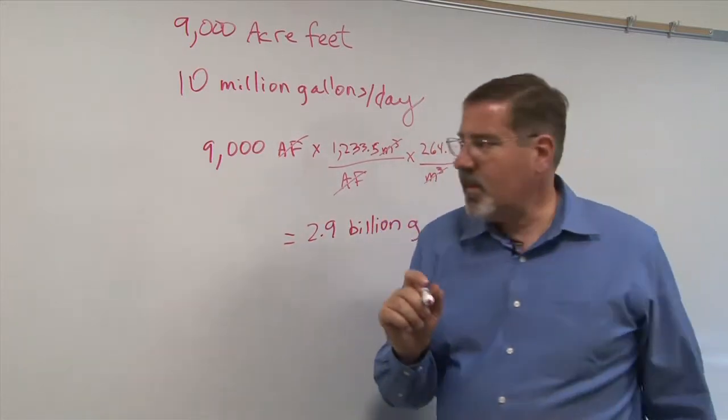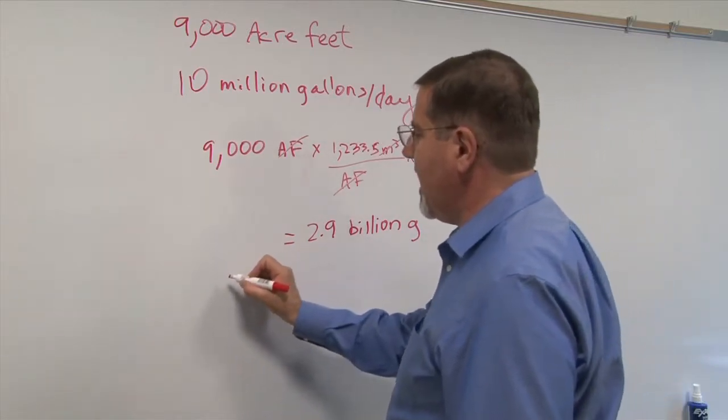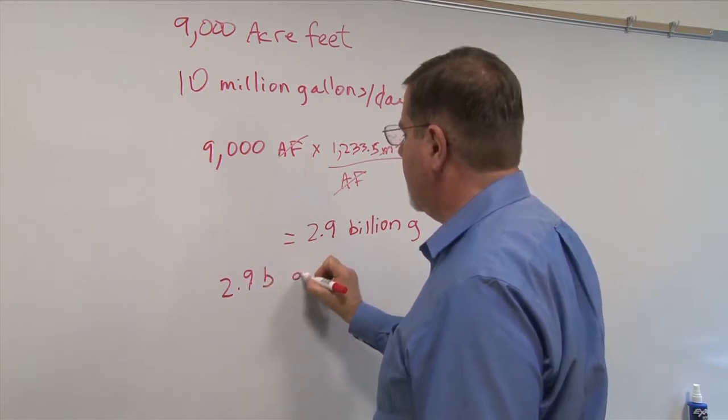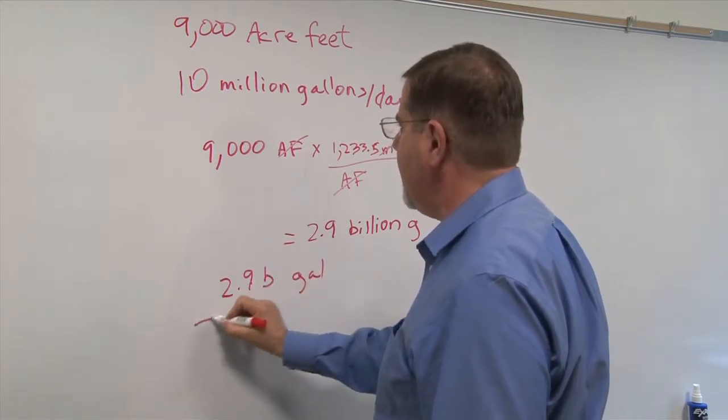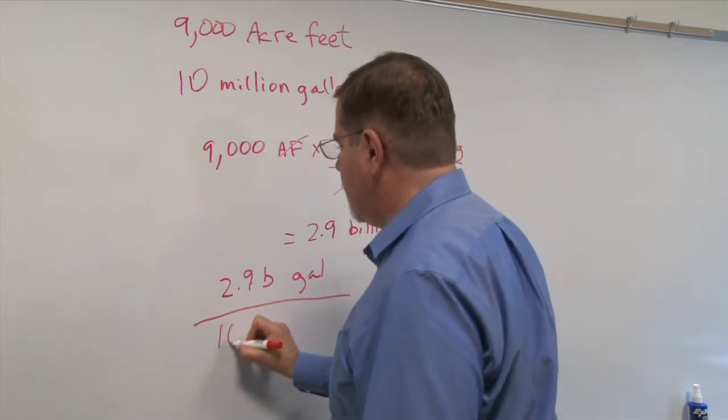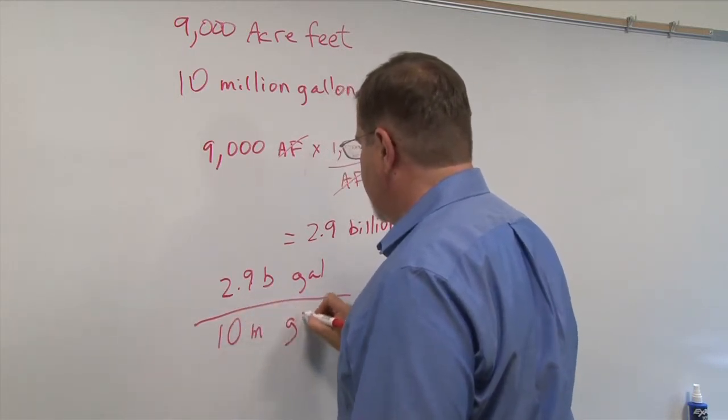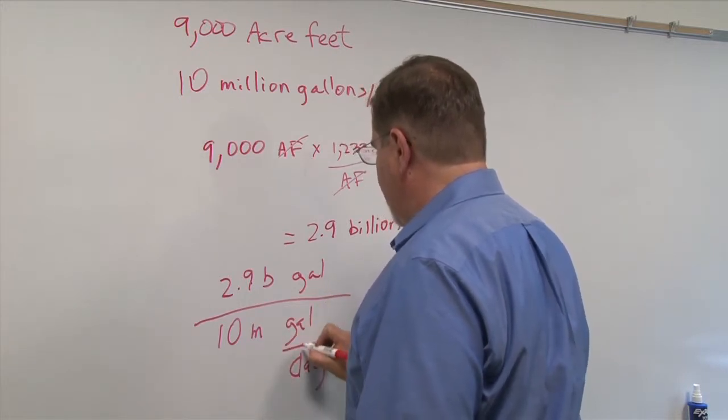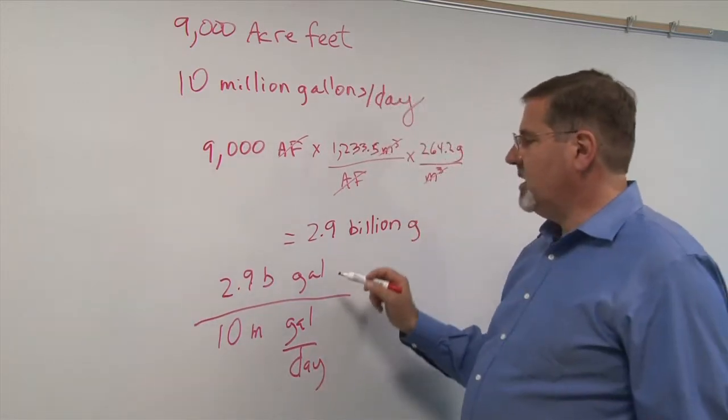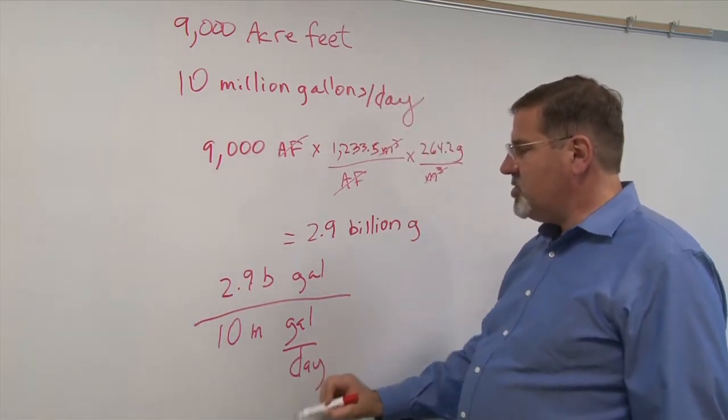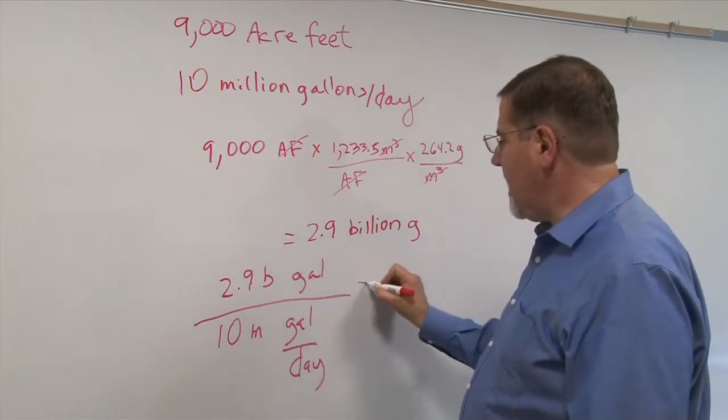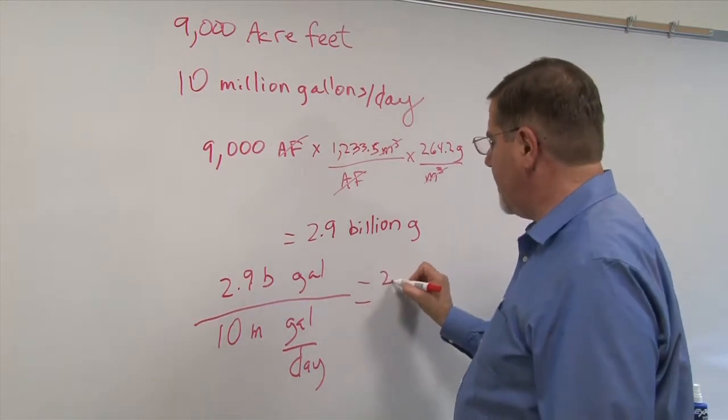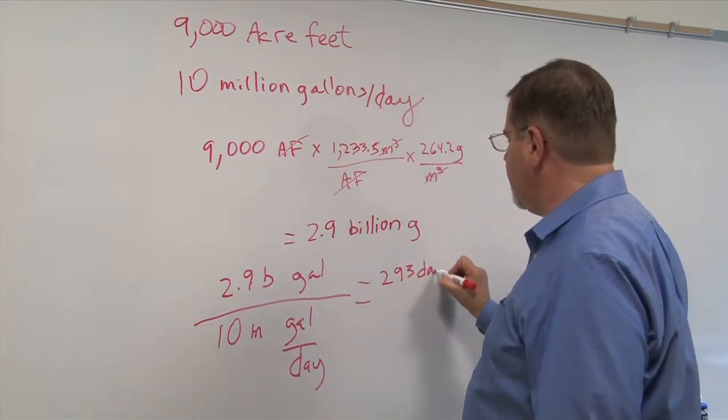All we're going to do is divide 2.9 billion gallons by 10 million gallons per day. And when you do this kind of division, the gallons cancel and the day jumps all the way up to the numerator. And when you do the math, what you come up with is 293 days.